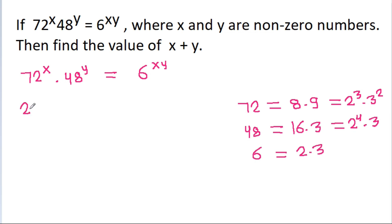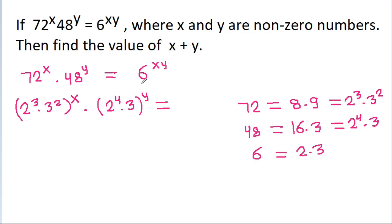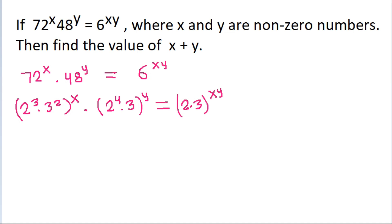So, 72 is 2³ into 3² power x, into 48 which is 2 power 4 into 3 power y, is equal to 6 which is 2 into 3 power xy. We know that any number (a into b) power x is equal to a power x into b power x.